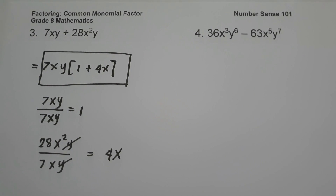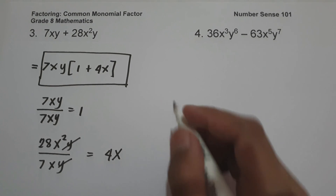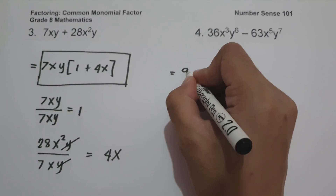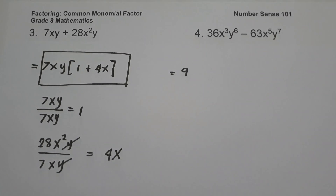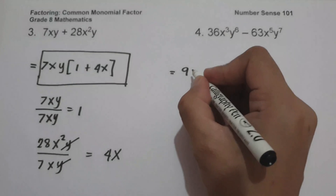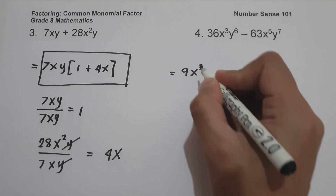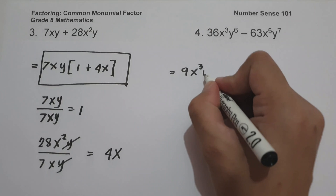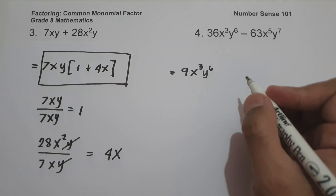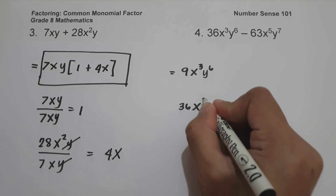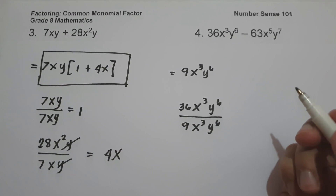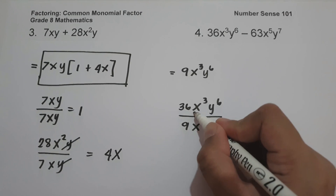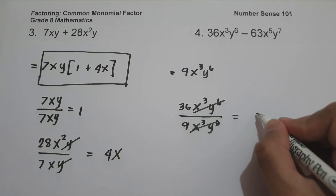On number 4 we have 36x³y⁶ minus 63x⁵y⁷. The GCF of 36 and 63 is 9. For the x variable, we have x³ and x⁵; we simply choose the smaller exponent, so x³ is our GCF. For the y variable, y⁶ is the smallest. Let us divide: 36x³y⁶ divided by 9x³y⁶ — we can cancel x³ and y⁶ — and 36 divided by 9 is 4.